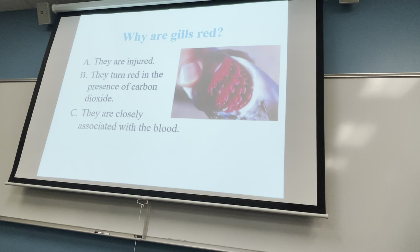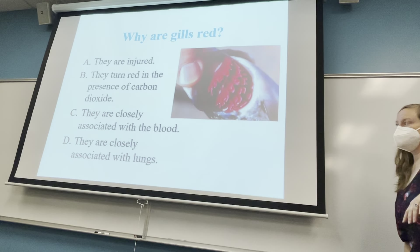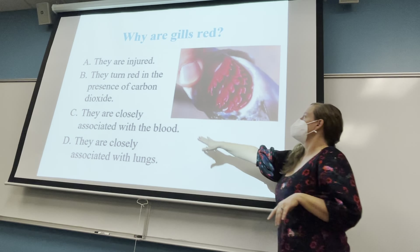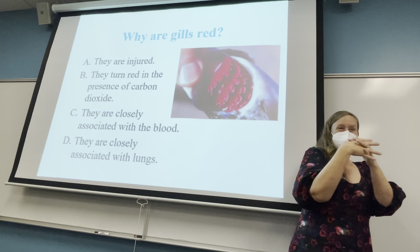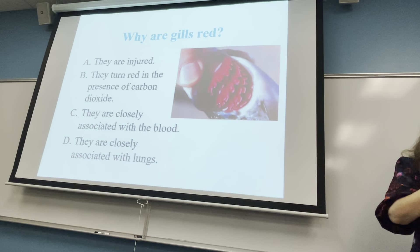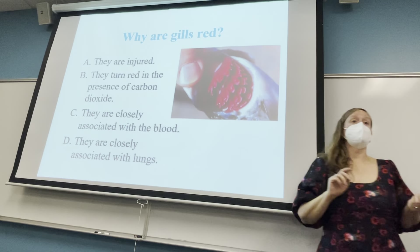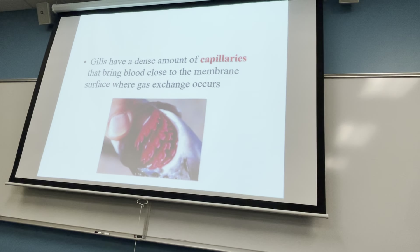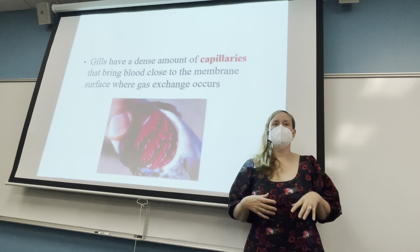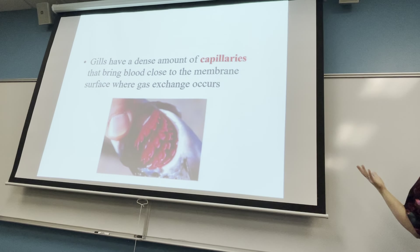Why are gills red? Because they're infused with tons and tons of capillaries — tiny blood vessels. The circulatory system takes oxygen from the gills and brings it out to the cells, then takes the carbon dioxide back so it can be released. This connection with capillaries applies whether an organism is in water or air — moisture is the number one characteristic of a respiratory structure, allowing for easy diffusion of gases.